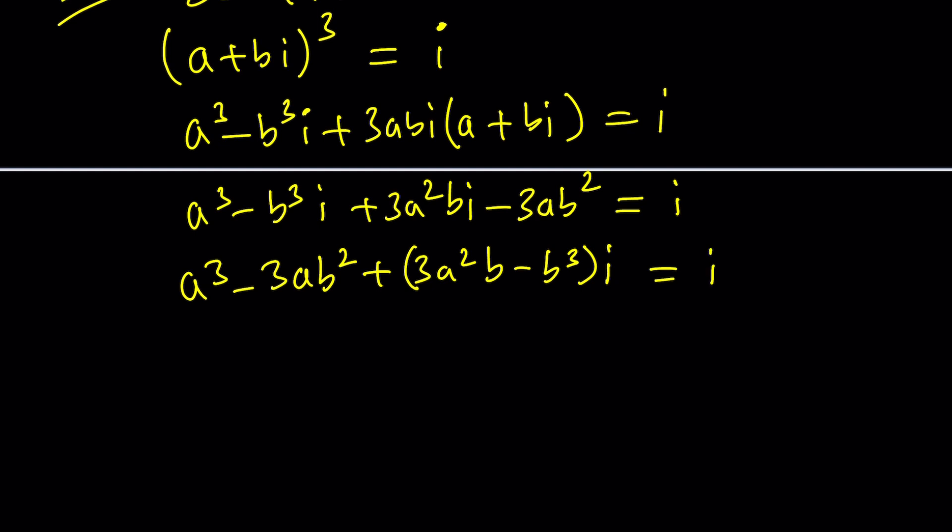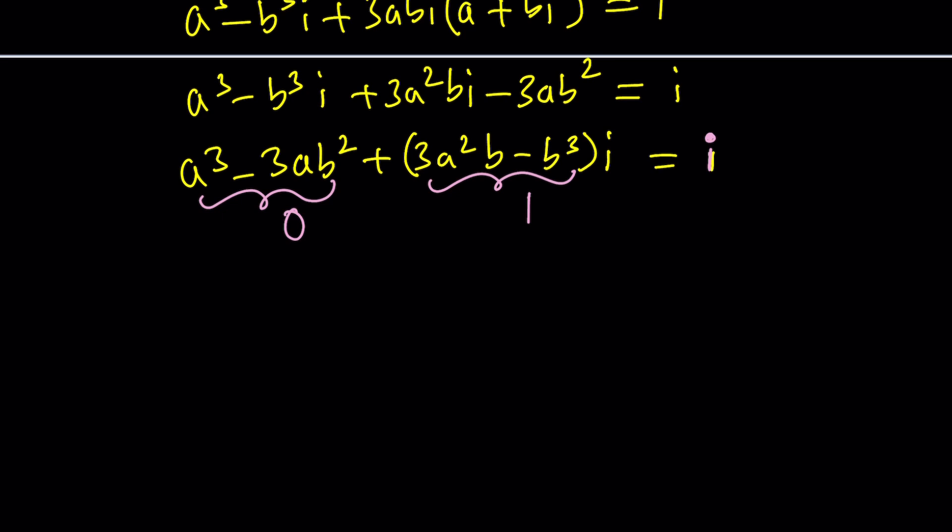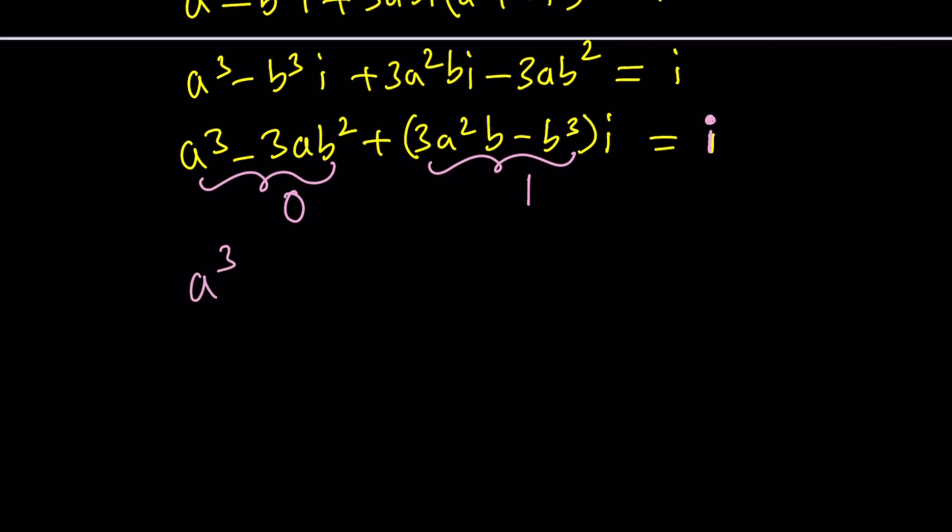Let's put the real parts together and the imaginary parts together. So in order for these two complex numbers to equal each other, the real parts have to equal. But on the right-hand side, we have an imaginary number whose real part is zero and its imaginary part is the coefficient of i, which is one. So from here, we get a system of equations.